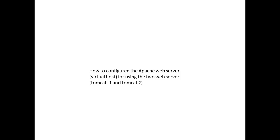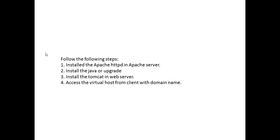In web server one, a Tomcat instance will be running, and in web server two, a second Tomcat instance is running. We have to follow these steps: first, install Apache httpd on the Apache server in a Unix environment. Second, install or upgrade Java JRE to whatever version you want. Third, install Tomcat on both web servers. Fourth, access the virtual host configuration from the client using a domain name.